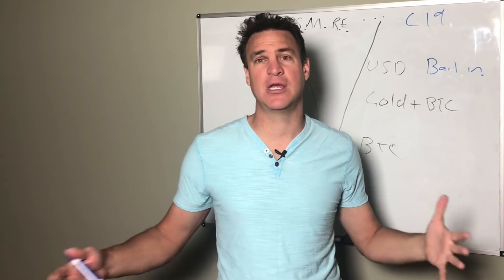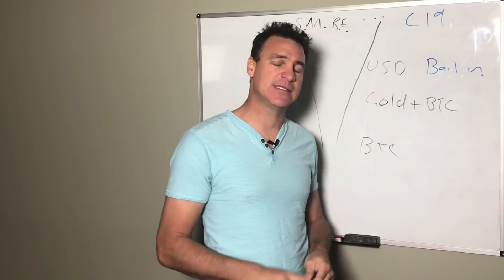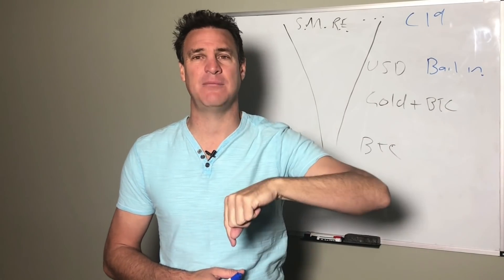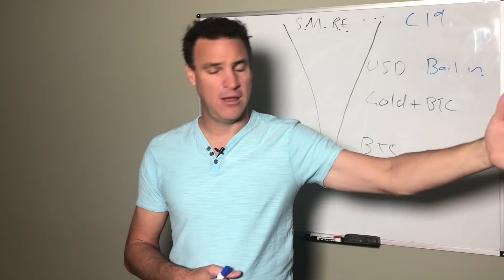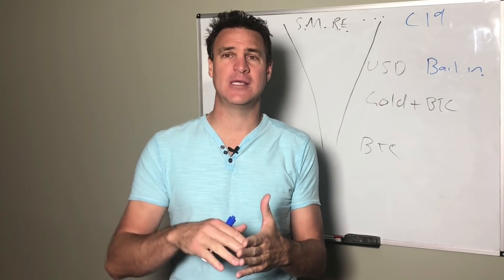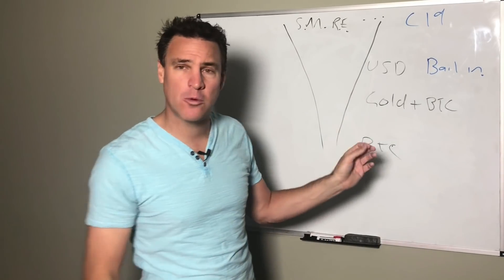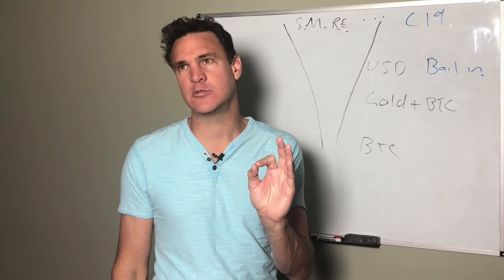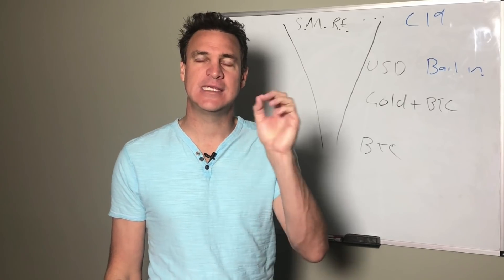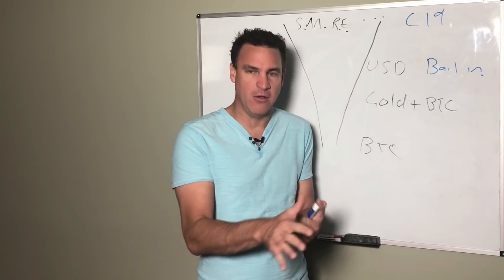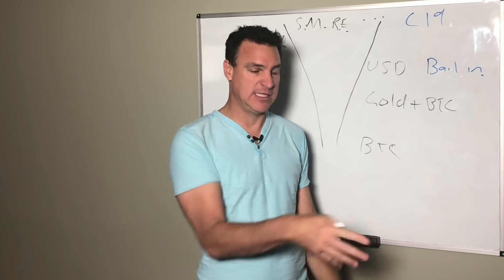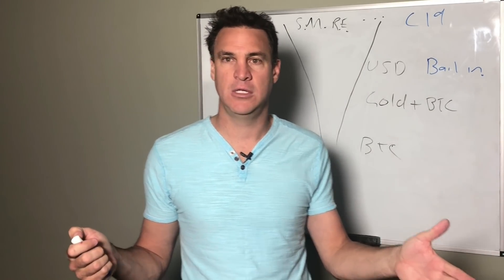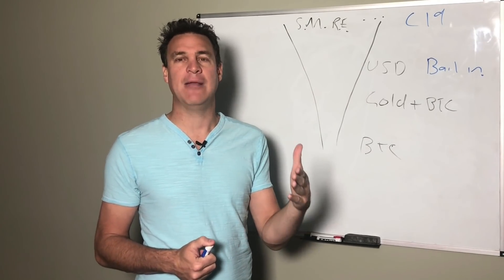At some point what we're going to see is a nationalization of gold in some major country around the world. To cast your mind back to the Great Depression, Roosevelt says guys gold is now illegal, citizens are not allowed to own gold, you must sell it back to the federal government. When everybody's sold back their gold he readjusted the price of gold, doubled it, and all that wealth got stolen from the people.